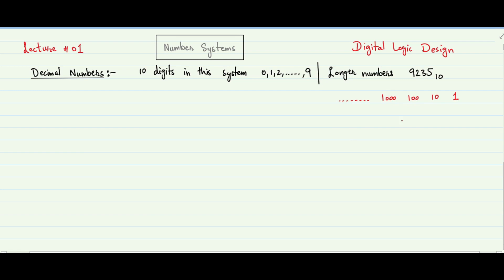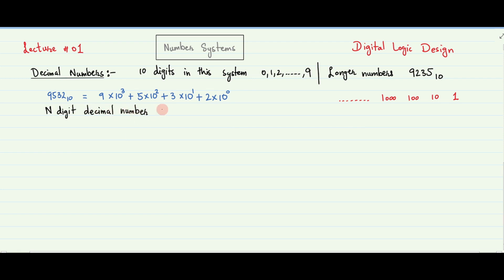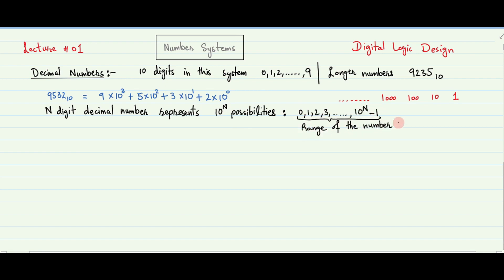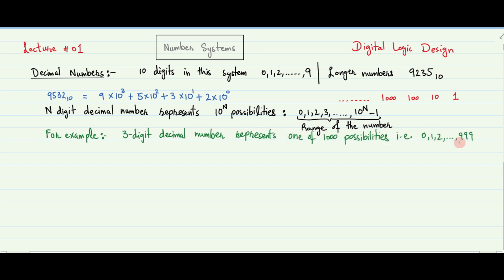To avoid confusion when operating in multiple bases, the base is indicated by a subscript after the number. Decimal number 953 base 10 can be written as the sum of each of its digits multiplied by the weight of the corresponding column. An n-digit decimal number represents 1 of 10 raised to the power n possibilities, that is 0 through 10 raised to power n minus 1. This is called the range of the number. For example, a 3-digit decimal number represents 1 of 1000 possibilities in the range of 0 to 999.